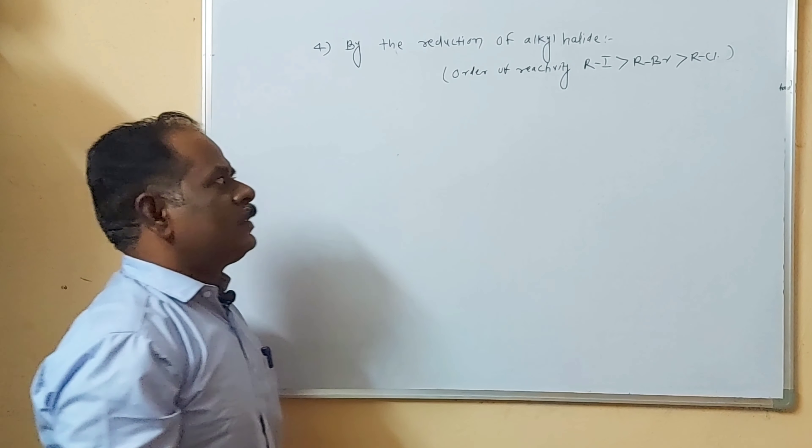Take the general reaction: alkyl halide R-X is treated with a reducing agent — zinc metal and dilute HCl — which liberates nascent hydrogen in atomic form. Because they are in atomic form they are highly reactive. Here a single bond is present, so substitution reaction takes place. The nascent hydrogen H replaces X to form R-H plus HX. R-H is the alkane. When alkyl halide is treated with nascent hydrogen liberated from zinc metal and dilute HCl, it forms the corresponding alkane.